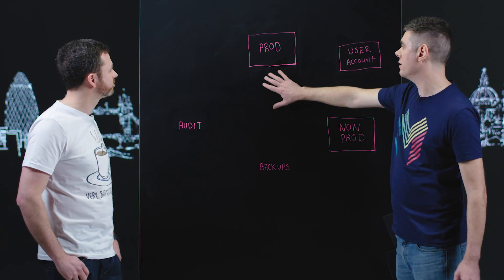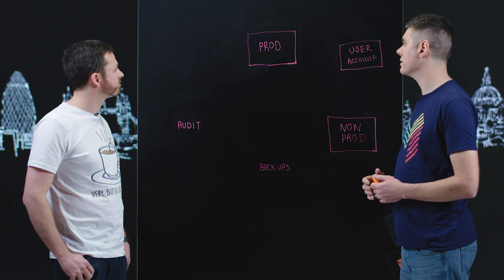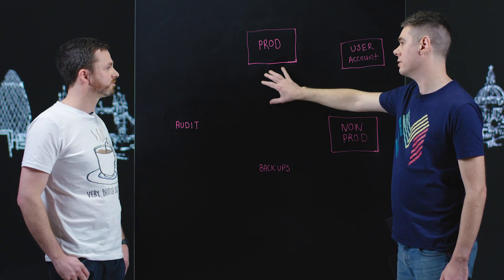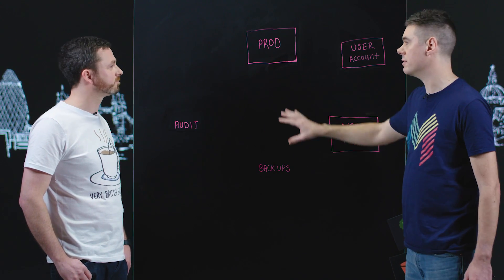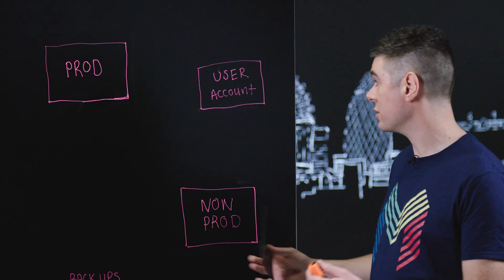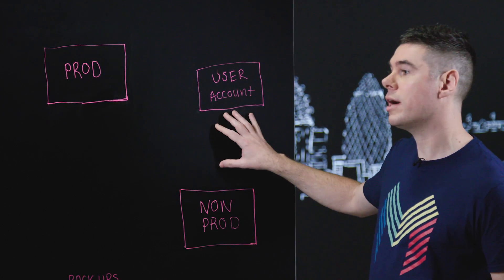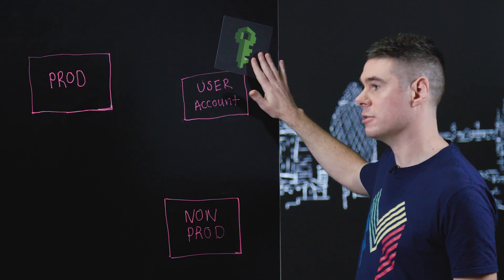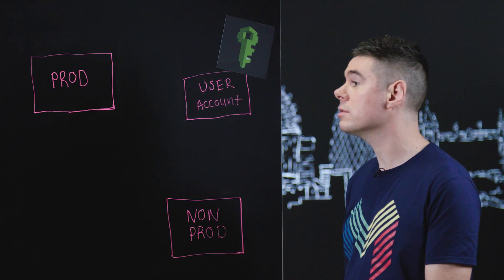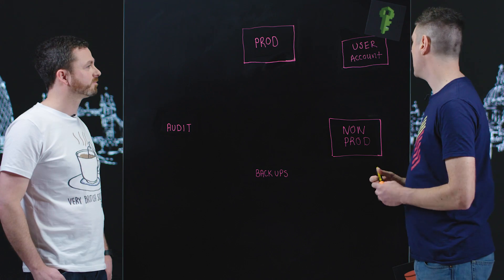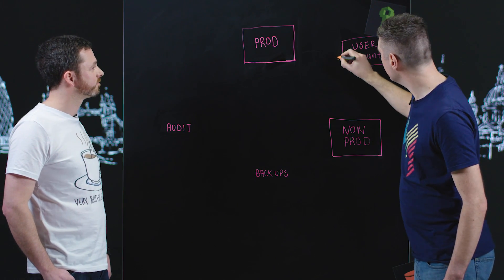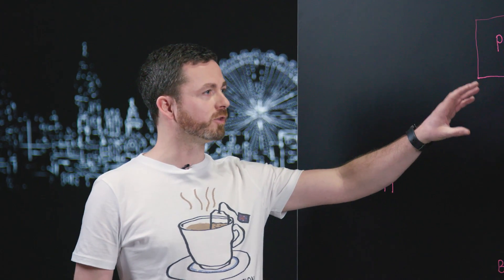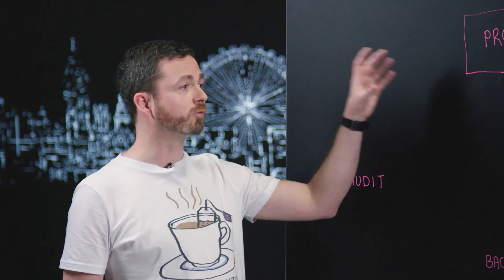We have our production environment, and one of the really good pieces of advice we got from Amazon was to use the production environment only for production workloads — not to put anything else in there. So we started off with a production account and then created an entirely separate account which we call our user account, where we keep people's logins, give people the right roles and privileges, and then they use STS to get the role they need to work on whatever they're working on. So you've created the accounts in the user account and then they're assuming roles over into your production.